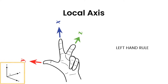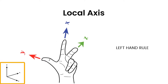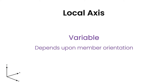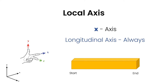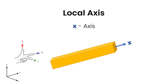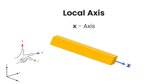On the bottom left, you can see the global access is constant — this is not changing. However, the local access is going to change depending upon your member orientation. Local access is variable and depends upon member orientation. The local axis is broken down into three parts. The first part is the X axis, which is always going to be the longitudinal axis. If you have a member with a starting and an ending, the axis along the length is going to be your local X axis. So every member, depending upon orientation, will have a different X axis, but that X axis will always be the longitudinal axis. Whenever you see a member, you know to point your index finger along the length of that member.